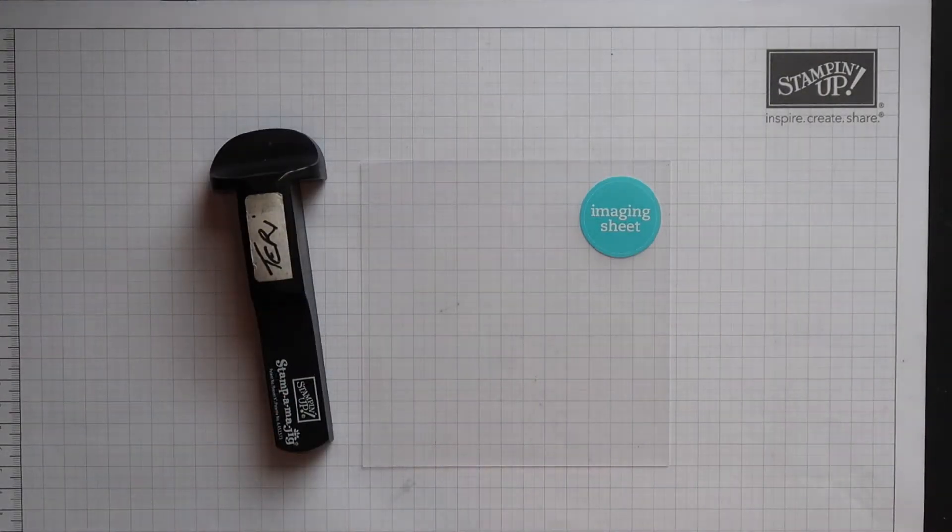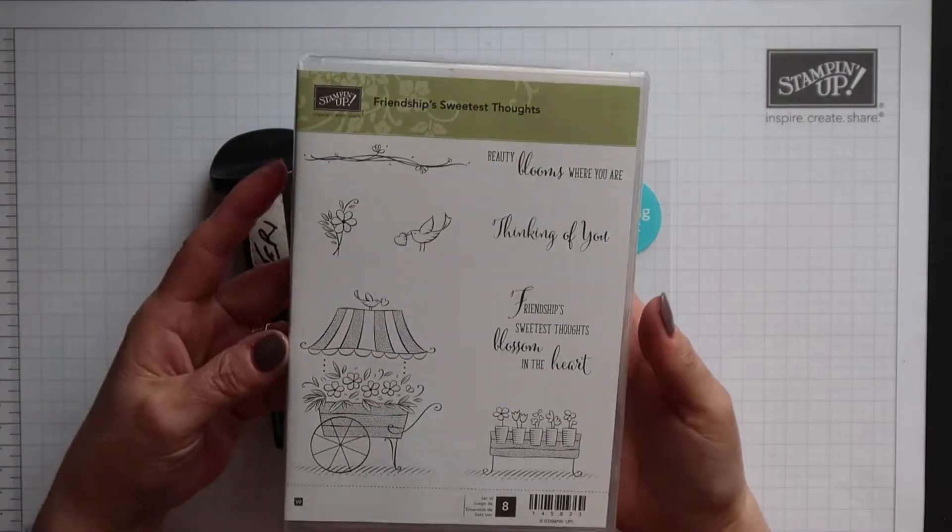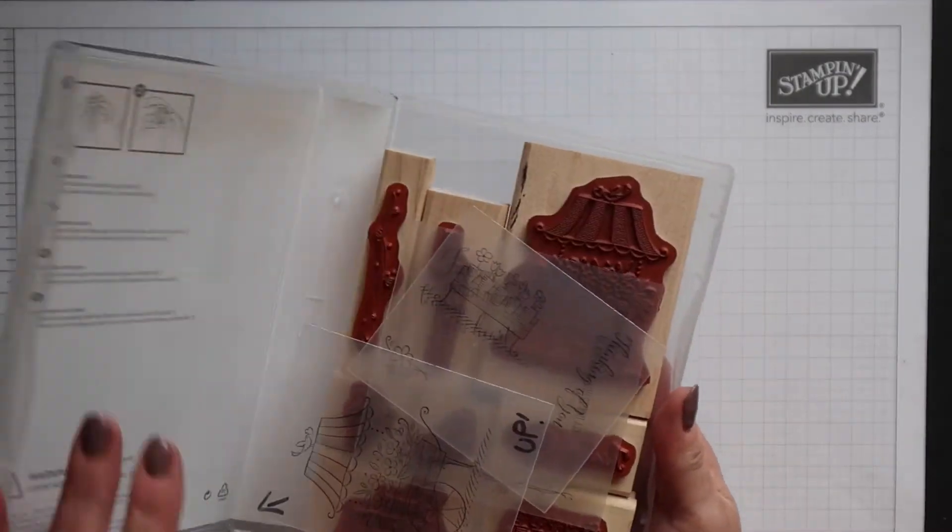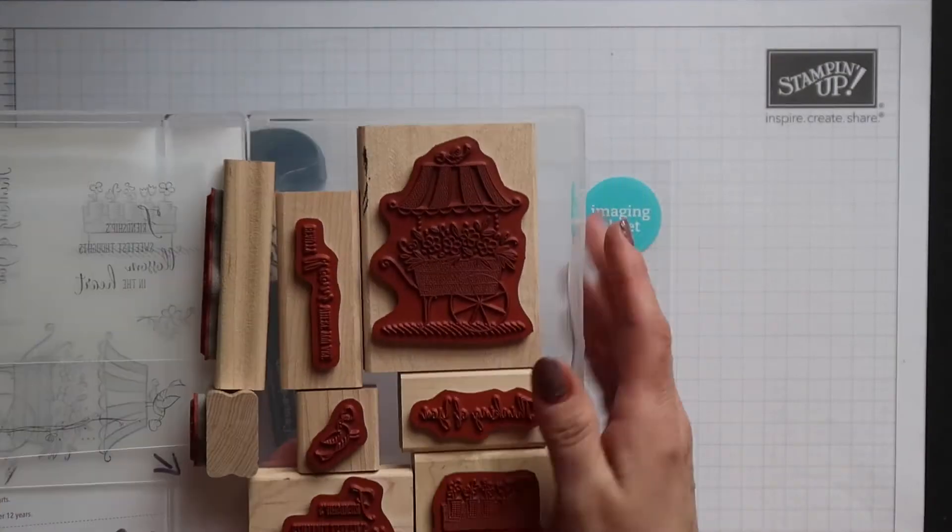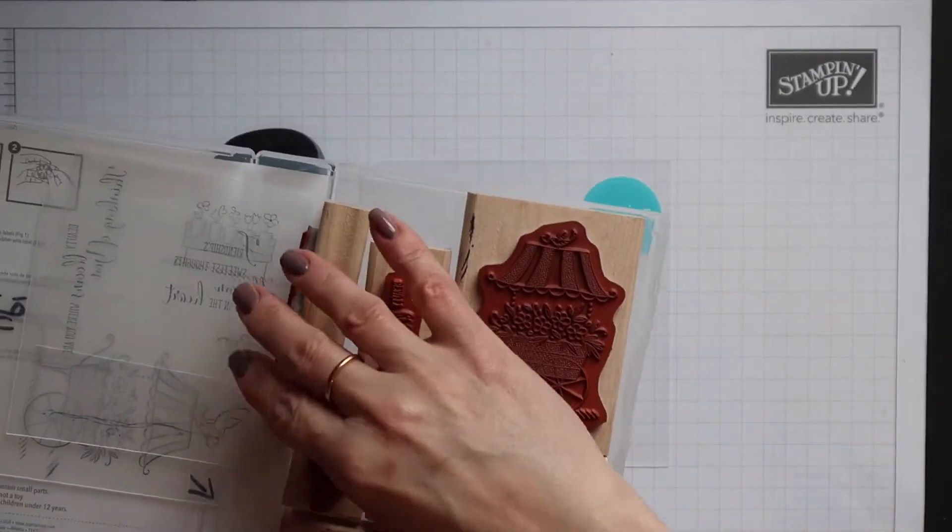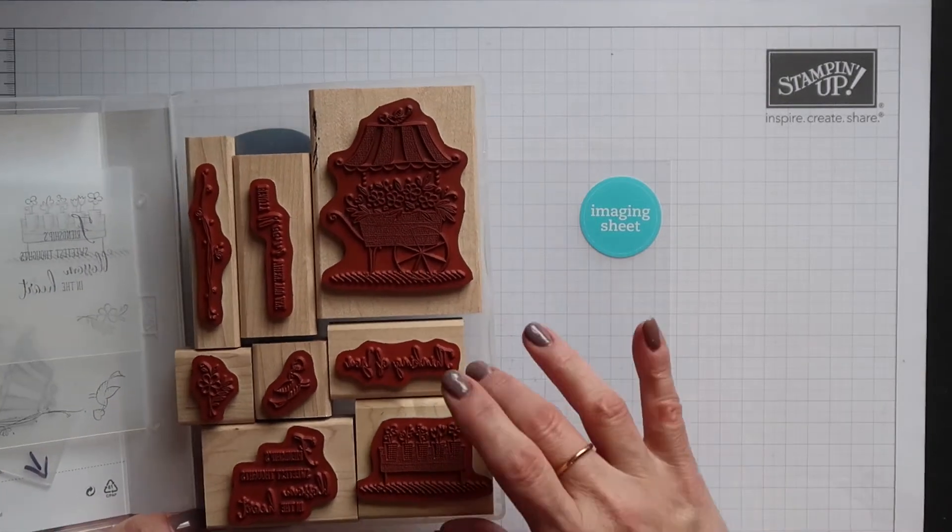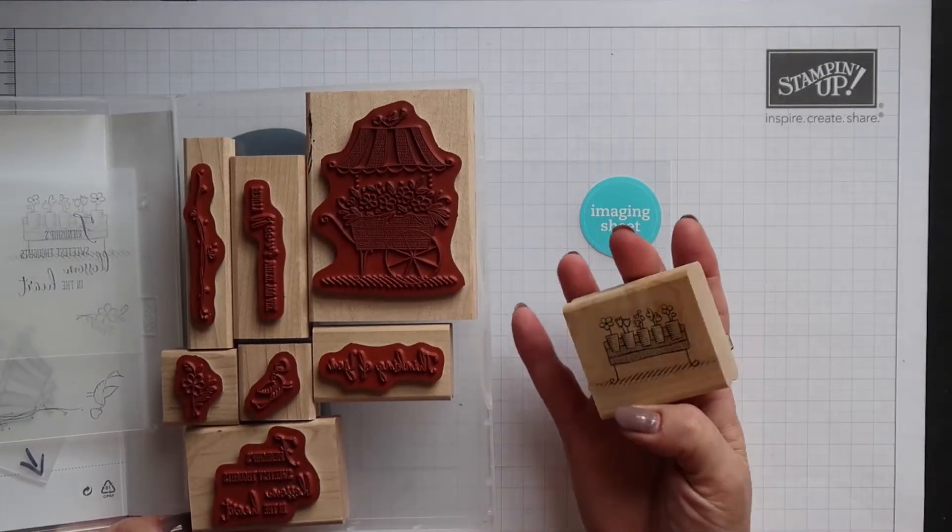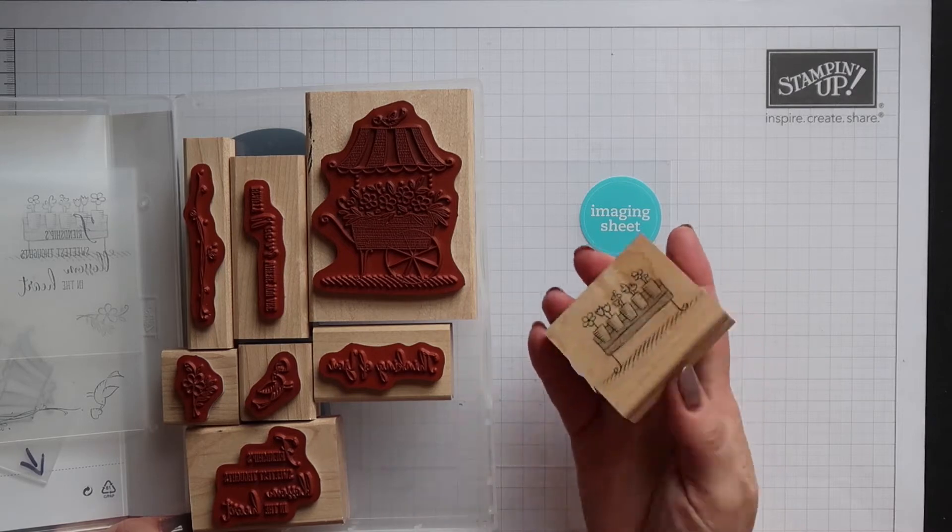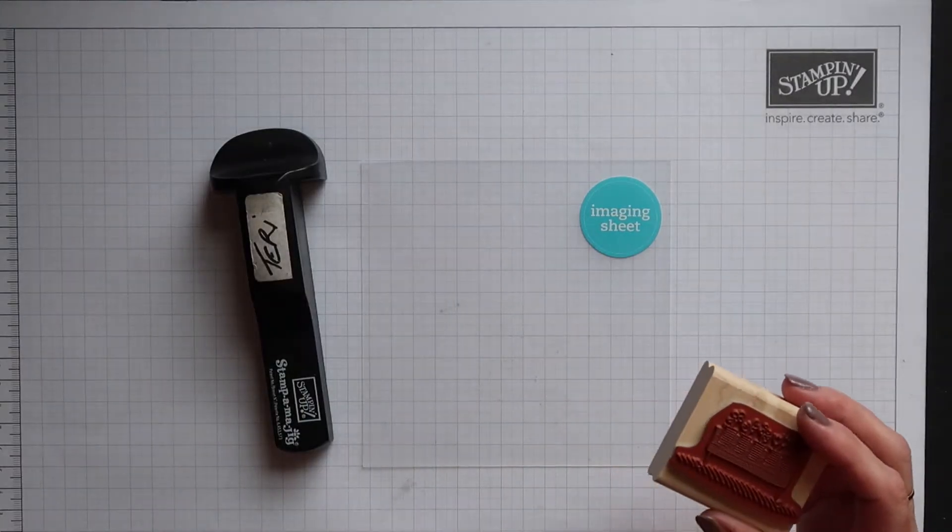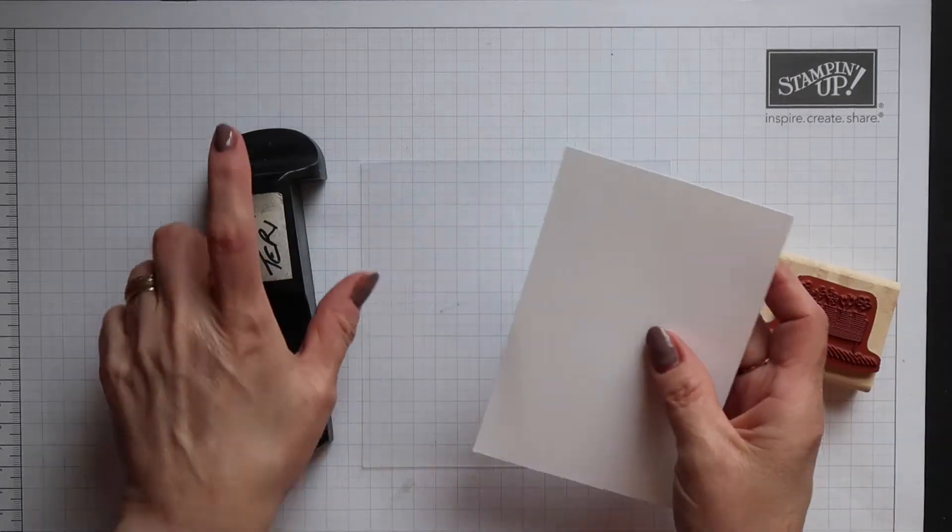The StampinMagic is used to help you stamp and position images exactly where you want them on a project. It's mainly used for wood mount stamps, although you can use it for clear mount and photopolymer. I'll come to that later on. I'm going to use a stamp from my Friendship Sweetest Thoughts set to show you how to use it.